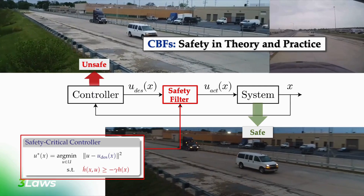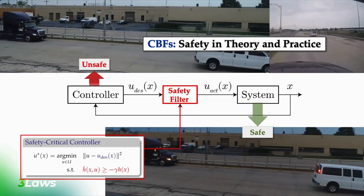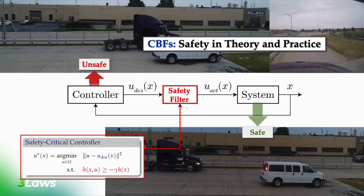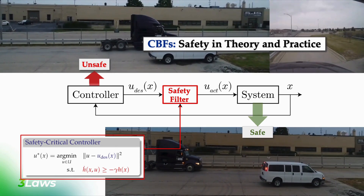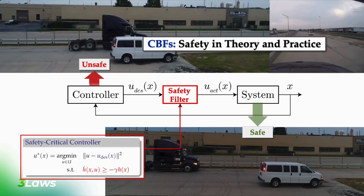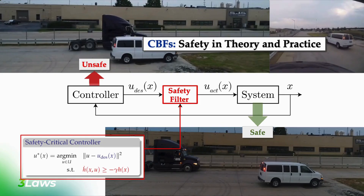The safety filter that enforces the CBF condition, shown in red, is able to regulate the output of the adaptive cruise controller to deterministically enforce constraints on its motion relative to the motion of the van. It takes in the desired steering, braking, and accelerator commands, and modulates them when necessary to enforce safety constraints. In this case, it brakes slightly sooner and with more force than the algorithm was requesting, resulting in no collision.